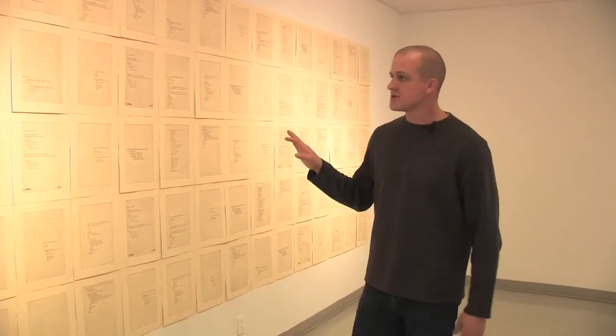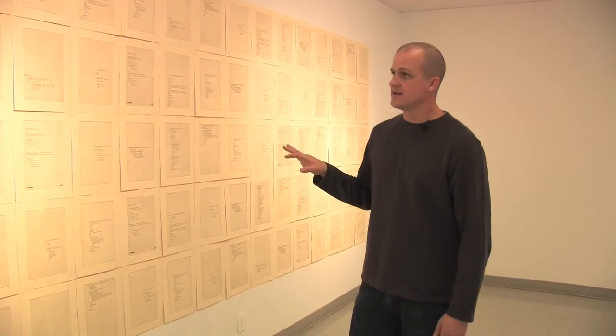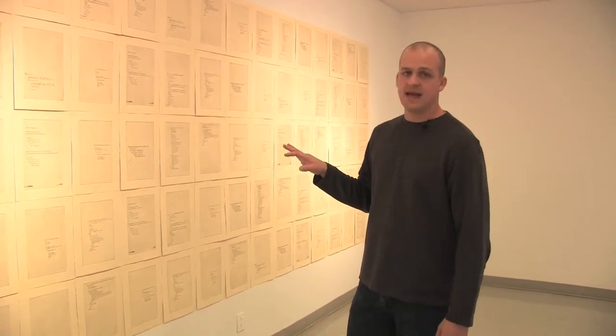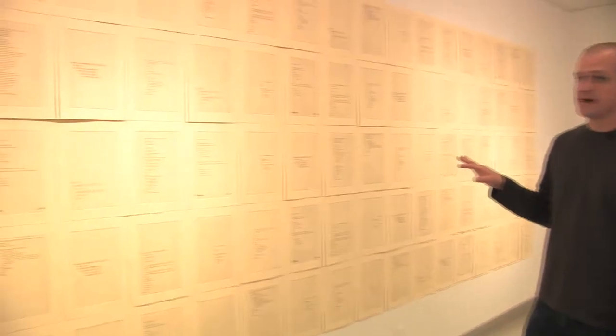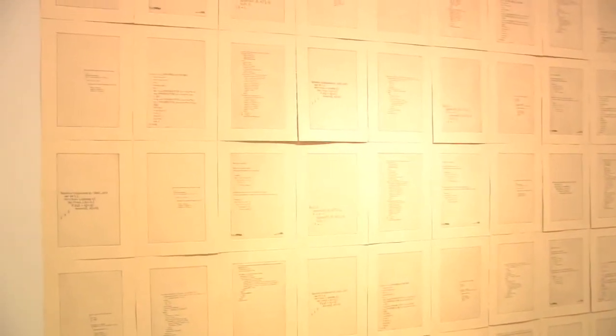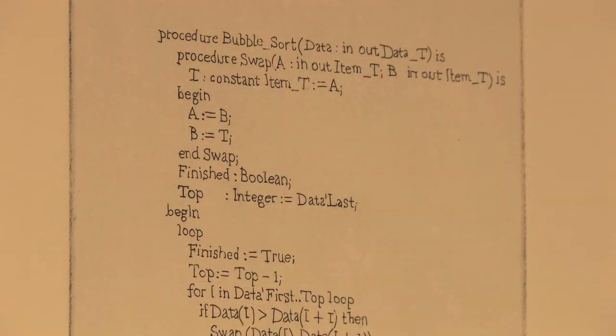This piece is called Manuscript and it is a series of 90 etchings on paper, which means that these are etched on metal plate and hand inked, wiped, and run through a press. I looked at a variety of different types of code: programming language and the human genome.